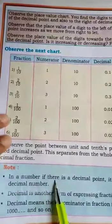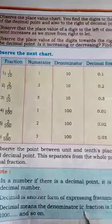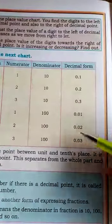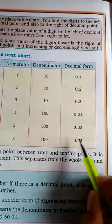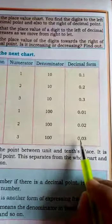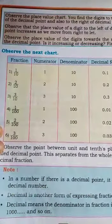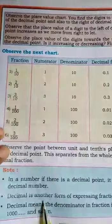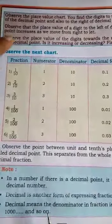If a number has a decimal point then it is called a decimal number. That is all these type of numbers: 0.1, 0.5, 0.7 like that. A number having a decimal point is called a decimal number. Decimal is another form of expressing fraction.